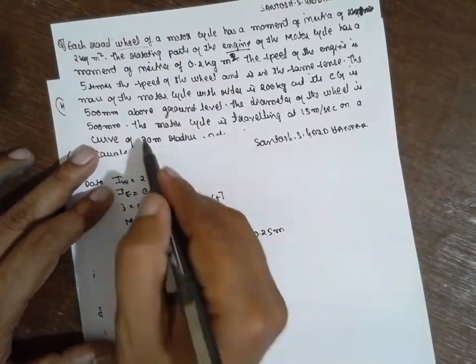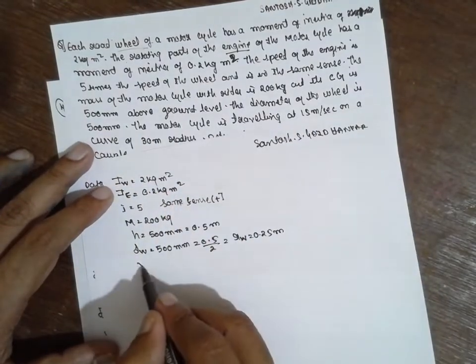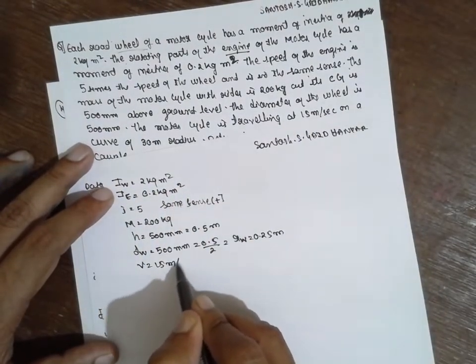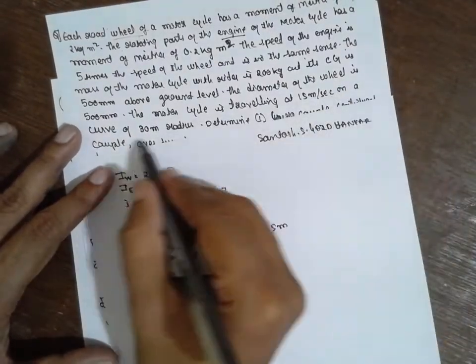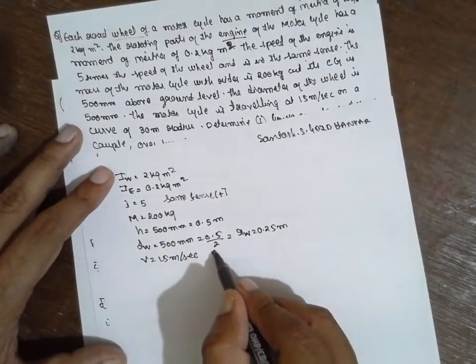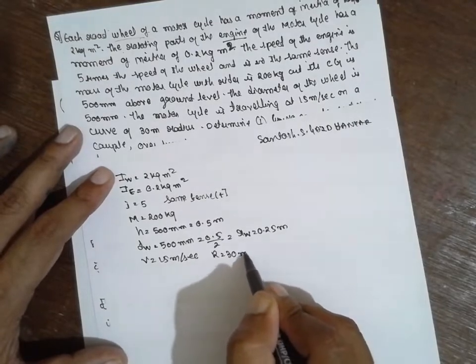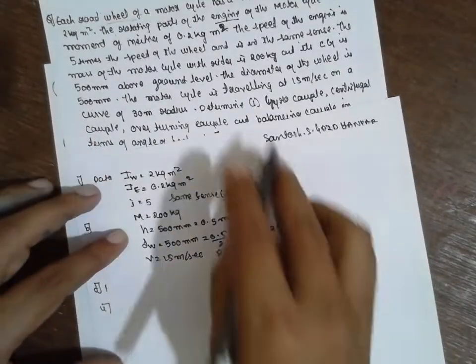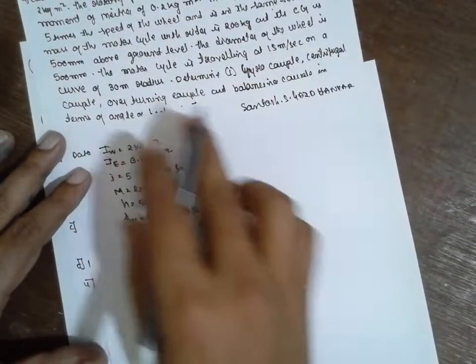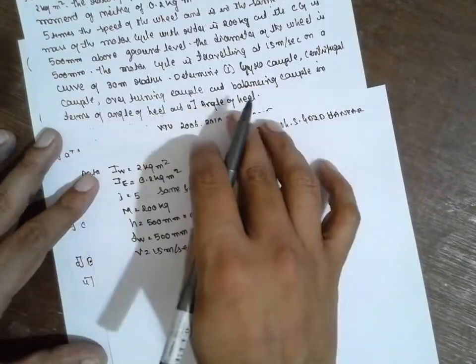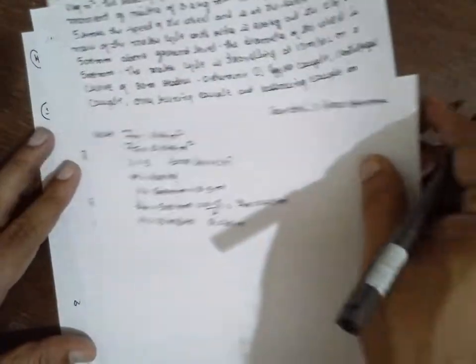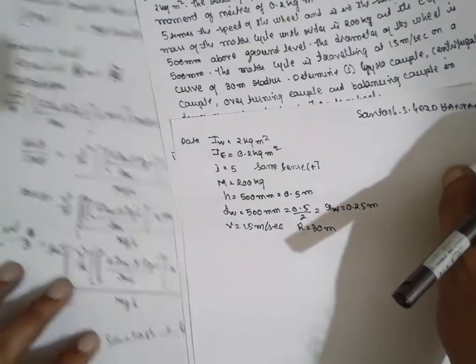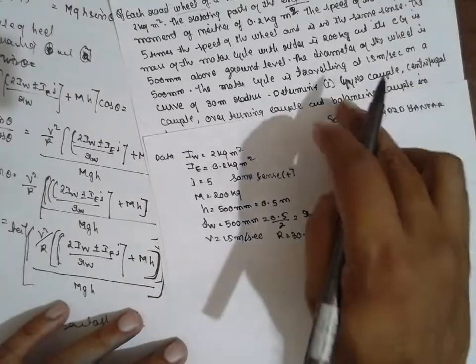The motorcycle is traveling with velocity V equal to 15 meter per second on a curve of R is given 30 meter. Determine the gyroscopic couple, centrifugal couple, overturning effort. But I do not want to go more detailed. Directly I will use the formula and find out the angle of heel. Because in order to find out the angle of heel, this entire thing is required.